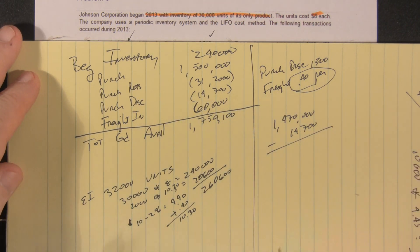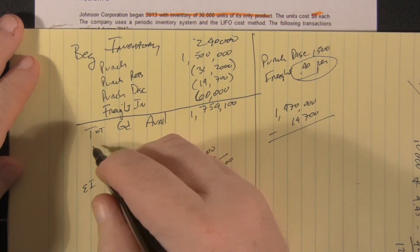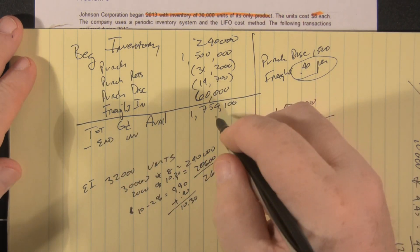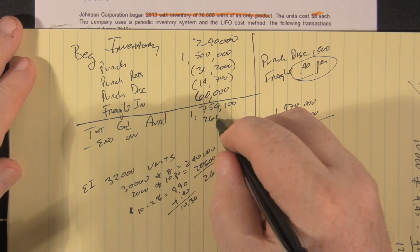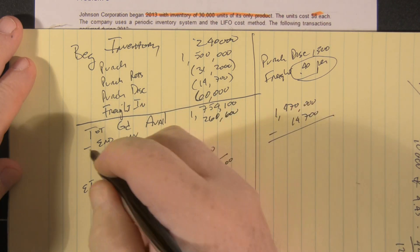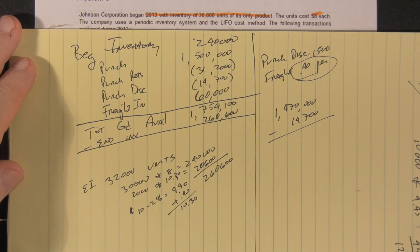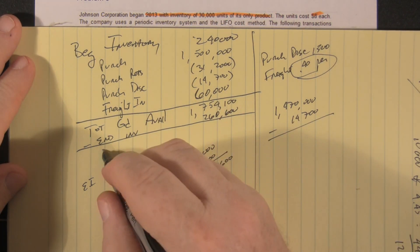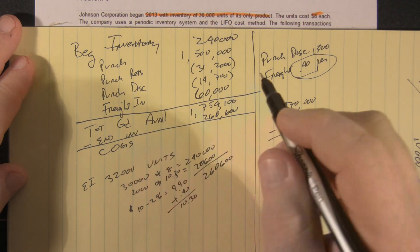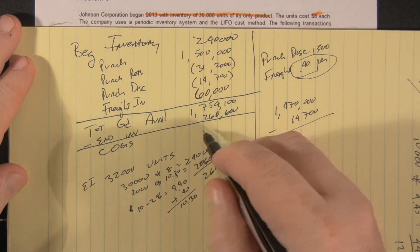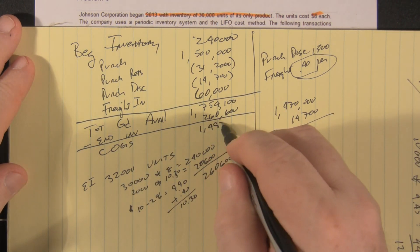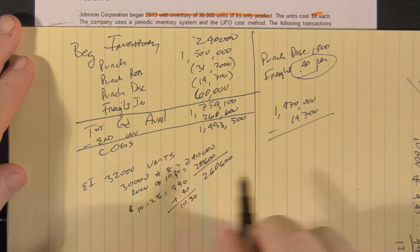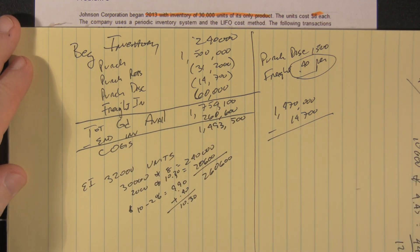So that's our ending inventory. Bring that up: less ending inventory $260,600. Do our subtraction, and our cost of goods sold is $1,493,500. That's the number we were seeking.